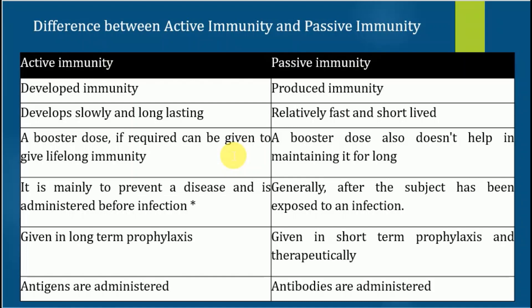Different vaccines are provided to newborn babies in two to three cycles — an initial small dose followed by a booster dose. This cycle produces long-lasting immunity against the disease, and some vaccines work for a lifetime, such as the smallpox vaccine. In passive immunity, booster doses do not help in maintaining it long-term, because we are not activating the immune system — we are directly supplying ready-made antibodies. Those antibodies are destroyed within a short period, so there is a chance of re-infection by the same disease.